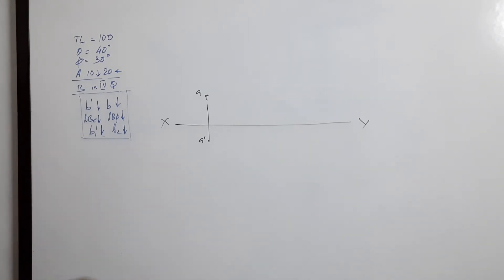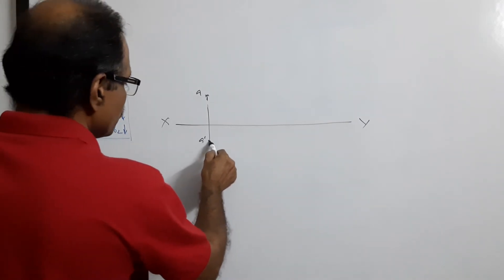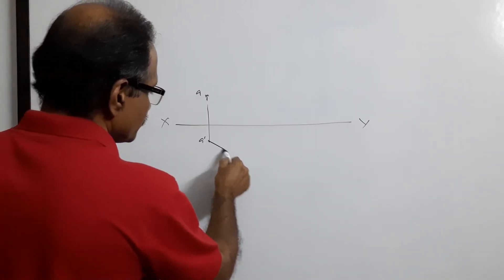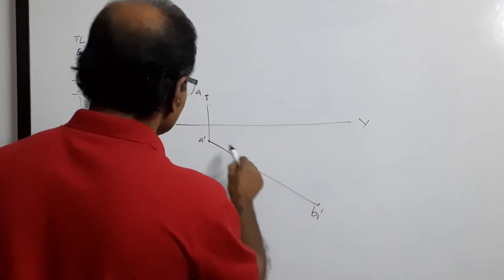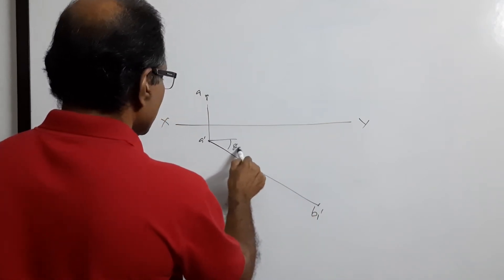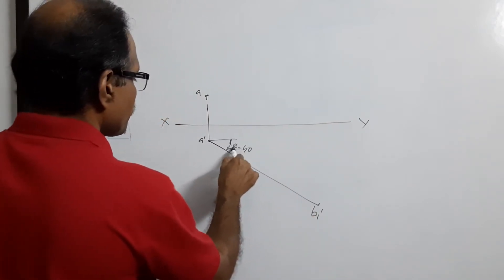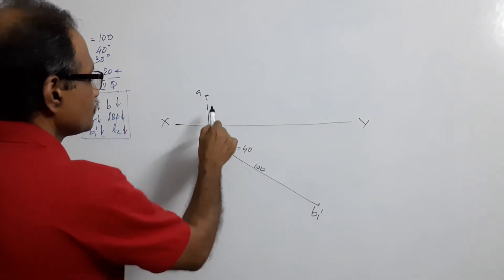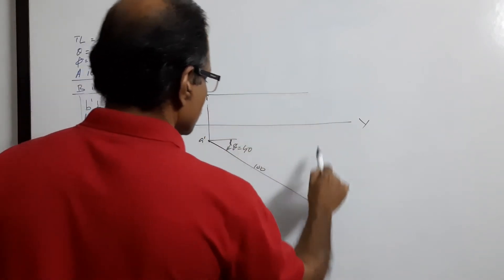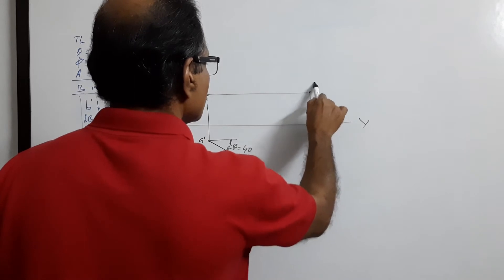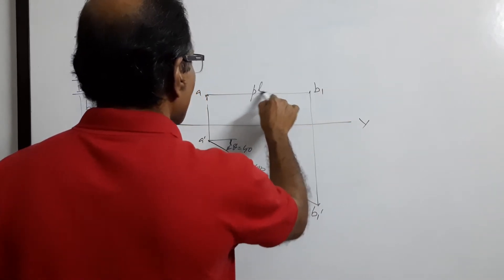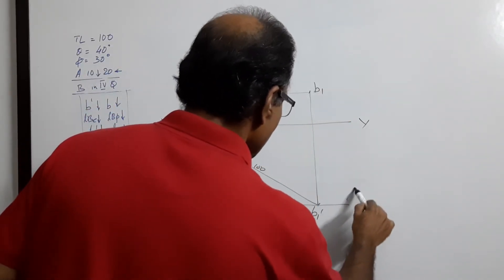As a result of which at A dash you have to draw a line at 40 degrees downwards. B1 dash theta equals 40 to length 100. B1 plan length LB.